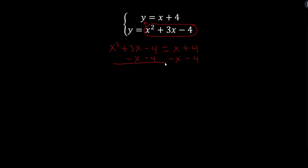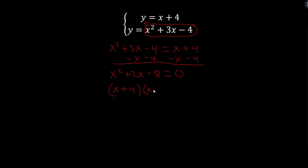I'm subtracting x and subtracting 4 from both sides. On the right-hand side I get zero, and on the left I have x squared plus 2x minus 8. This is factorable — I'm looking for two numbers that multiply to negative 8 and add to positive 2. Those numbers are positive 4 and negative 2. Check: 4 times negative 2 is negative 8, and 4 plus negative 2 is positive 2. So we have two solutions: x equals negative 4 and x equals 2.